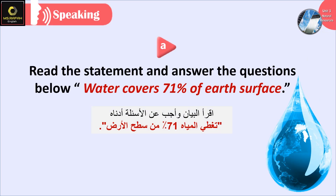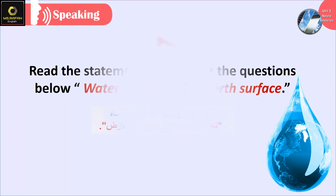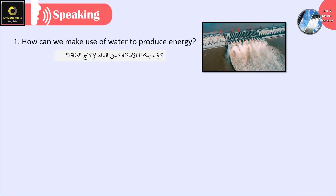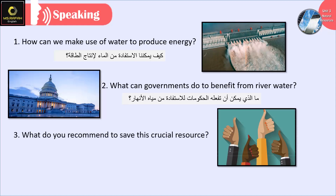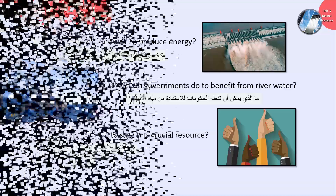Now let's move on to speaking. Read the statement and answer the questions below. Water covers 71% of earth's surface. How can we make use of water to produce energy? What can governments do to benefit from river water? What do you recommend to save this crucial resource? That's everything for today. Thanks for your time. See you next lesson.